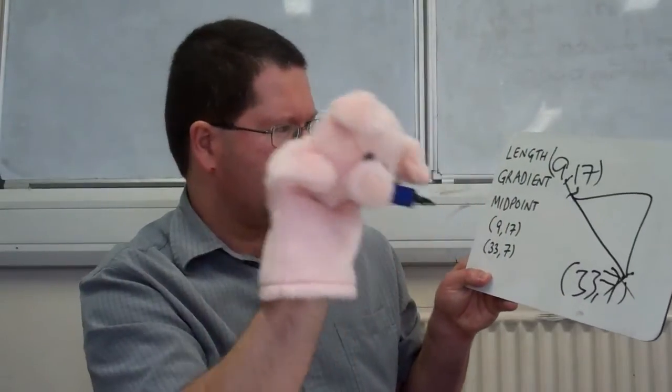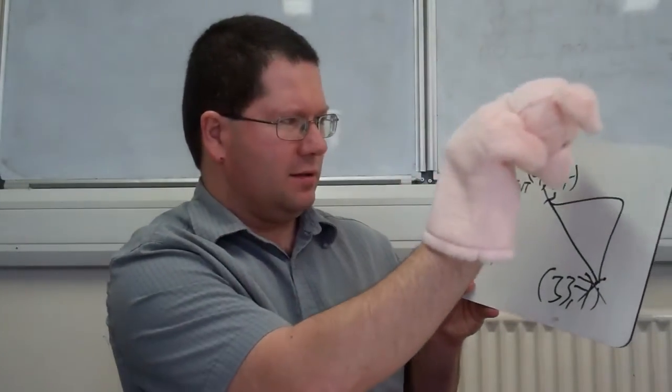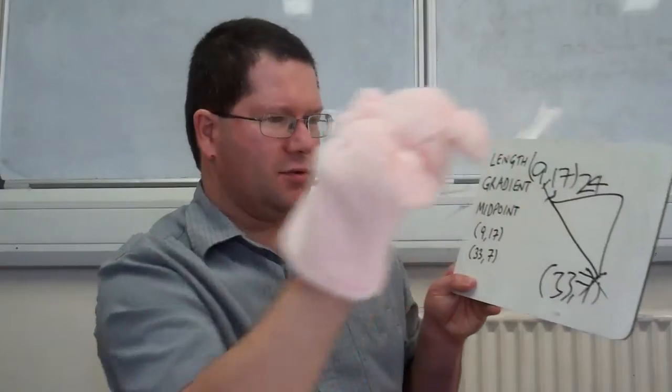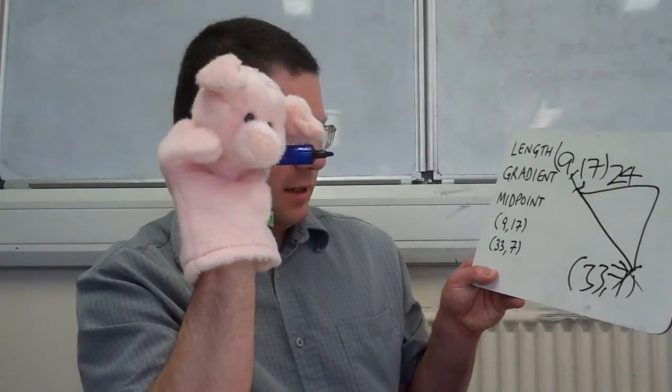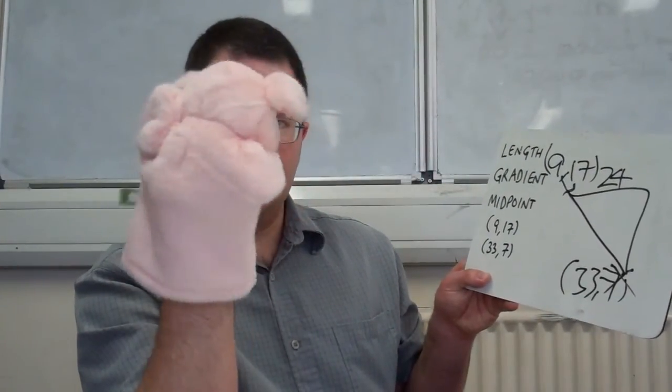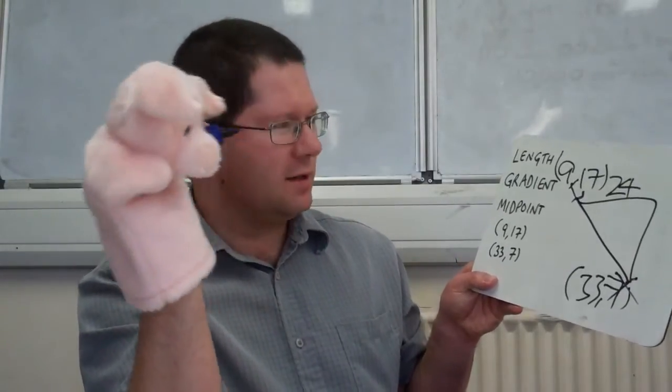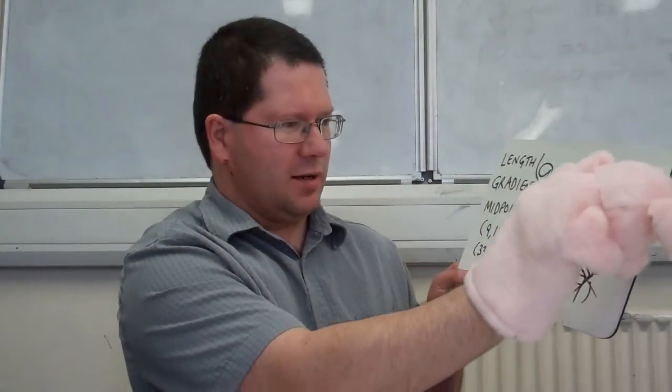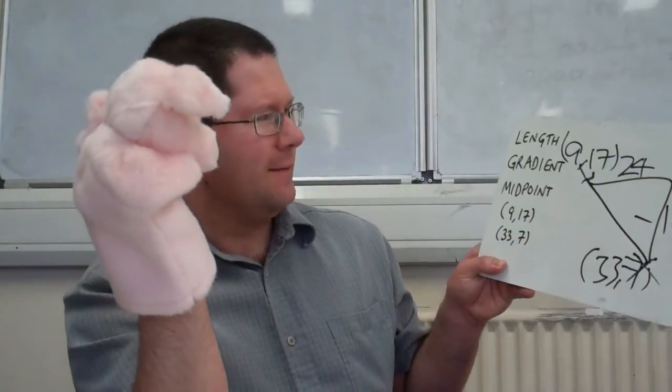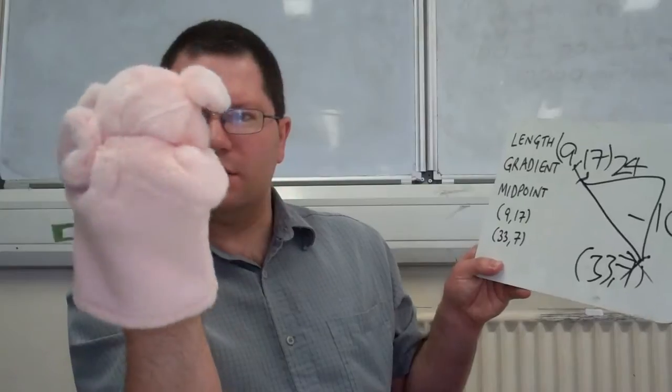So, across, yeah? So, 9 to 33. 33 take 9 is 24, yeah? And how about downwards? Yeah? What's that going to be? I hope you haven't just written on me. 10. 10 downwards. If we put a minus sign, go downwards 10. So, how long is that? How do you work out the length?